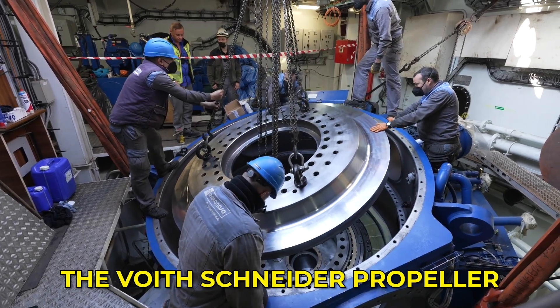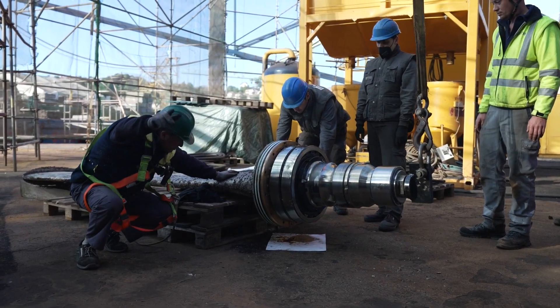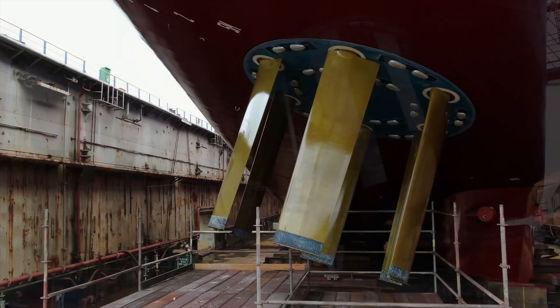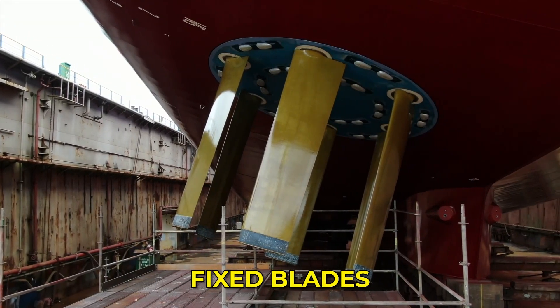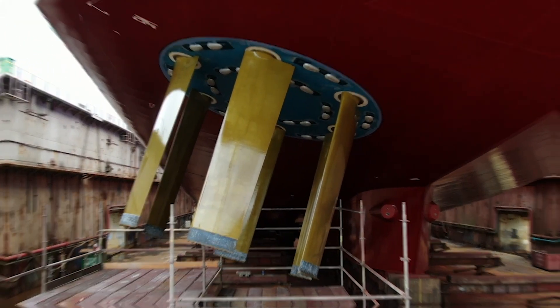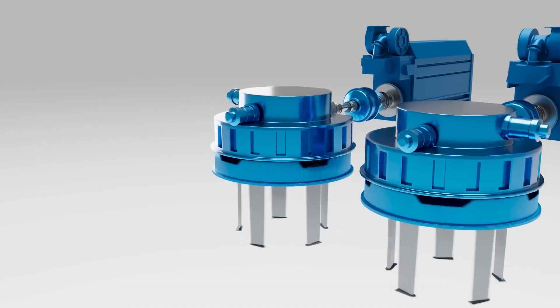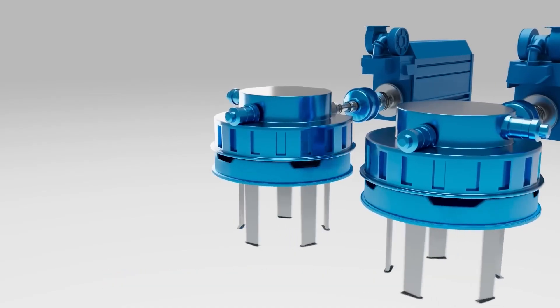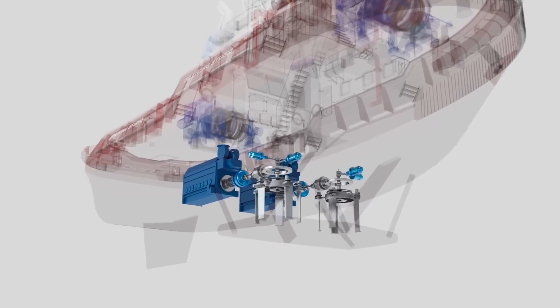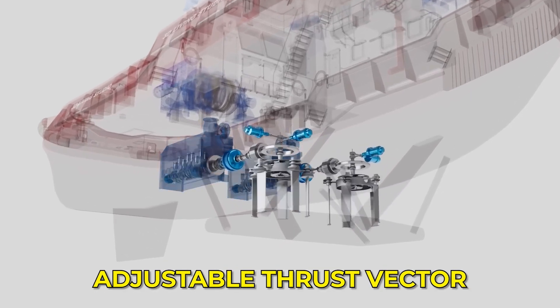At its core, the Voith Schneider propeller is built around a simple yet brilliant idea. Instead of fixed blades spinning around a central hub like a normal propeller, this system uses multiple vertical blades that can each change their angle of attack independently. This means that every blade can adjust how it cuts through water at any given moment, producing a highly precise and adjustable thrust vector.